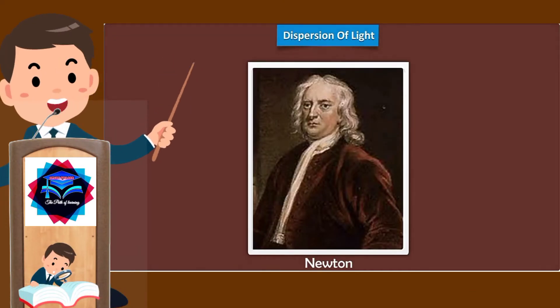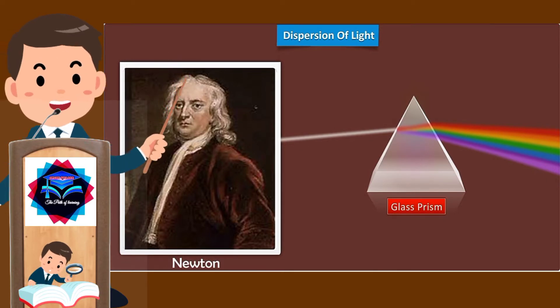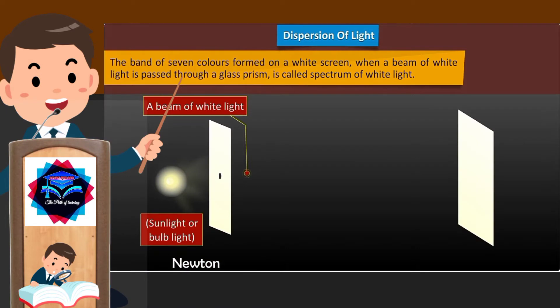Dispersion of light: In the year 1665, Newton discovered by his experiments with the glass prism that white light, like sunlight, consists of a mixture of seven colors. He found that if a beam of white light is passed through a triangular glass prism, the white light spreads to form a band of seven colors on a white screen.